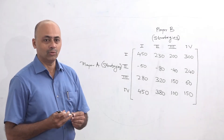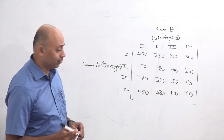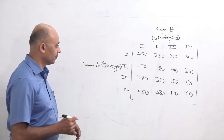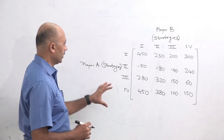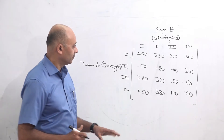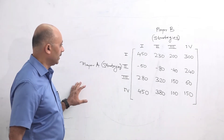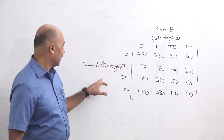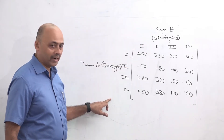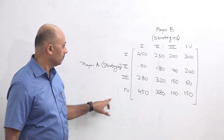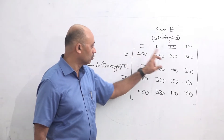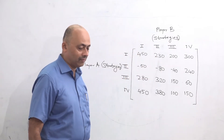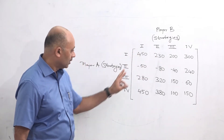Okay, so now we will see how to find the solution to this question. How do we read this matrix? There are two players, player A and player B. Player A has four strategies available to him. Player B also has four strategies available to him.